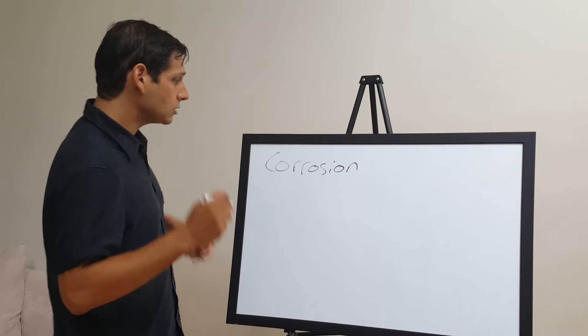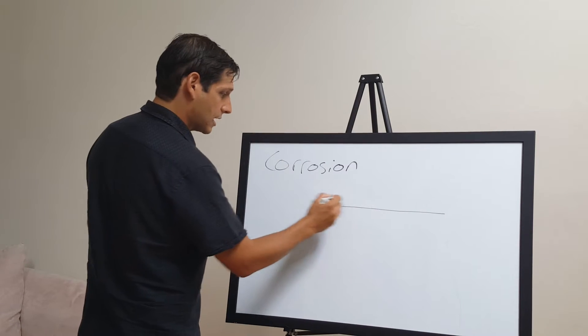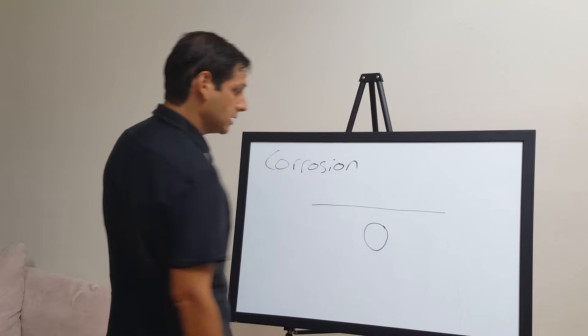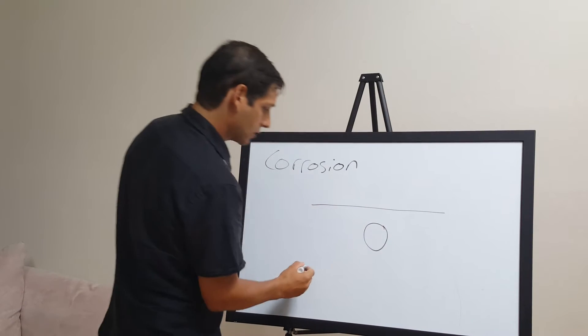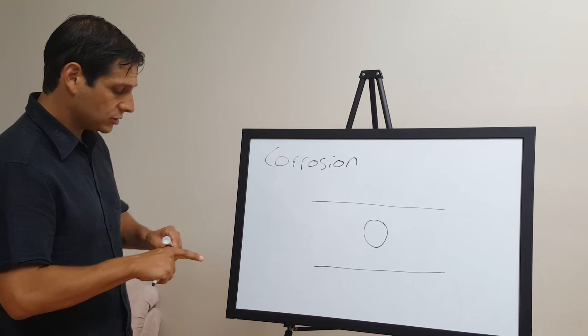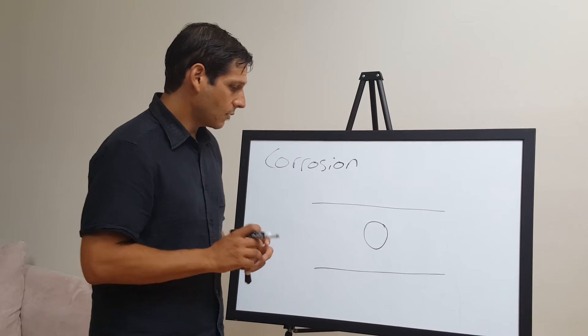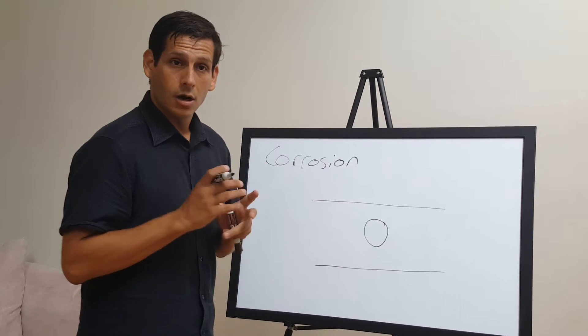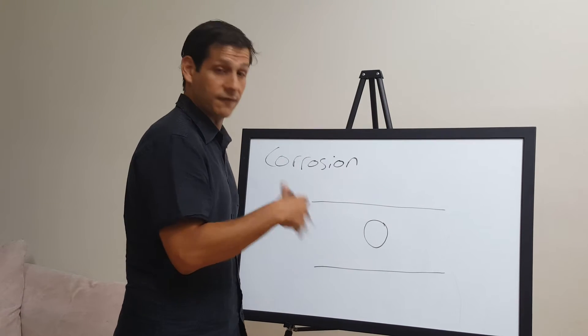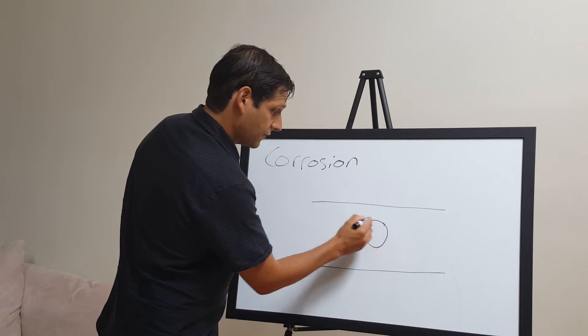For example, you have a concrete structure, and this is the top of your concrete, and you have a rebar—that's reinforcing steel that's embedded in the concrete. Here's the bottom of your slab. What happens during the corrosion process is you get a percentage area loss of your rebar, and you get a conversion of the steel, which is refined metal, into iron oxide.